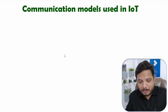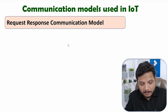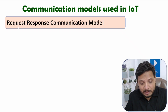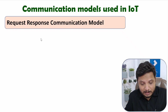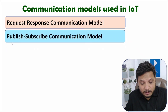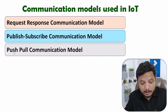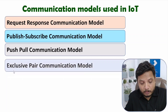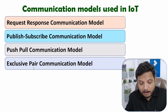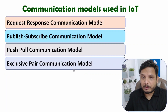Let me show you the outlines of this video first. The first communication model will be request-response, second is publish-subscribe, third is push-pull, and fourth is exclusive pair communication model.